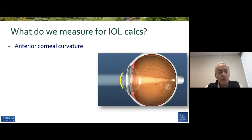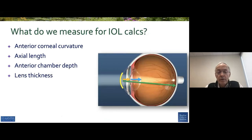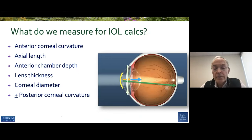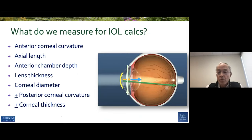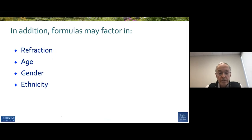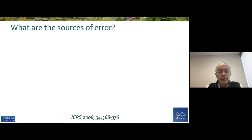So when we measure, we measure anterior corneal curvature, axial length, anterior chamber depth, lens thickness, corneal diameter. Some formulas are now including posterior corneal curvature, corneal thickness, and other formulas may factor in refraction, age, gender, and even ethnicity in trying to come up with the calculations.